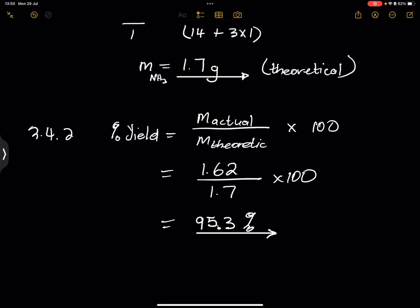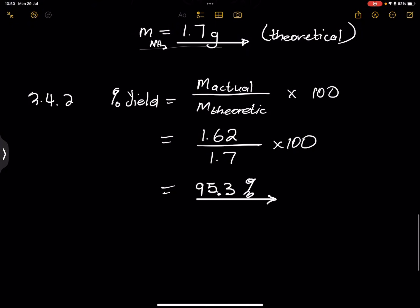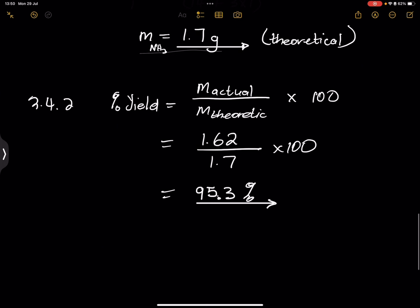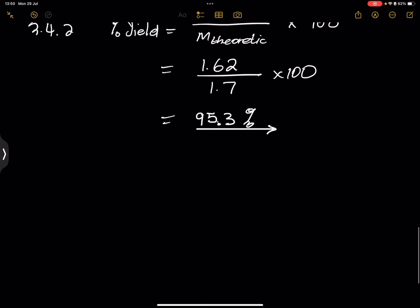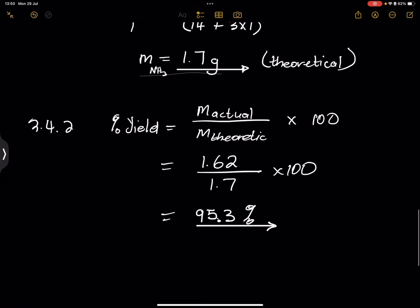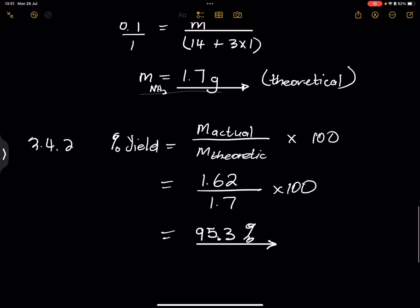Remember, the closer the percentage yield is to 100, the better — so 95.3 percent is quite a good yield in theoretical terms. That is how you calculate the percentage yield. I hope you were able to understand and follow along. For any problems in chemistry, we can always be there to assist you. All the details are in the description. See you guys next time.